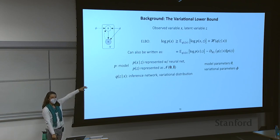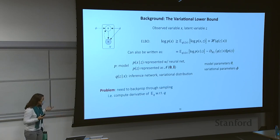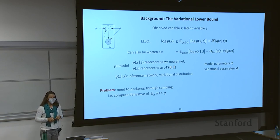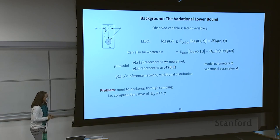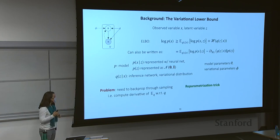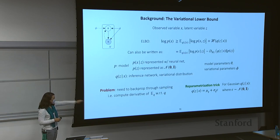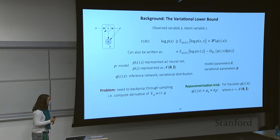There's a problem when maximizing these objectives: you have this sampling distribution Q(Z|X) and you need to differentiate through that sampling distribution to appropriately optimize your inference network. You need to compute the derivative of the expectation of Q with respect to Q. The nice thing about using a Gaussian for Q is that you can use the reparameterization trick: for a Gaussian random variable, you can represent it as the mean plus the variance times some noise. The right-hand side is fully differentiable into the mean and variance, which allows you to back-propagate into that sampling distribution and optimize the objective end to end.